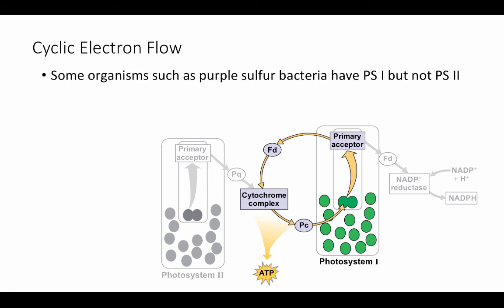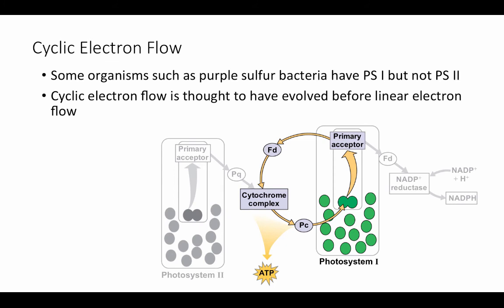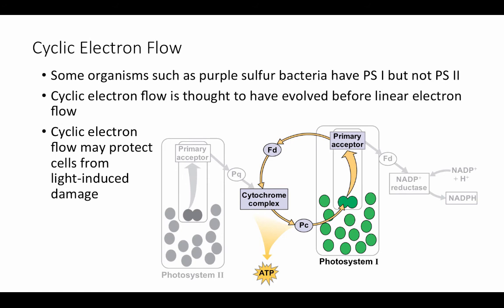Some organisms such as purple sulfur bacteria have photosystem I but no photosystem II, so they only engage in cyclic electron flow. This mechanism for the light-dependent reactions is thought to have evolved earlier than the full system using both photosystems — photosystem I using cyclic electron flow is thought to be the most ancient form of photosynthesis. It is also possible that cyclic electron flow may protect cells from light-induced damage.